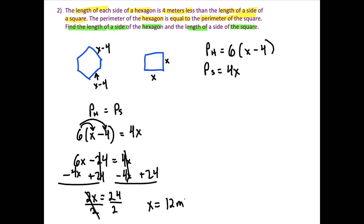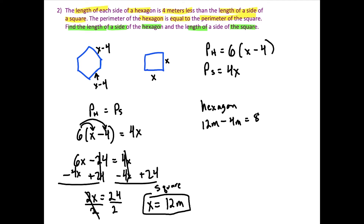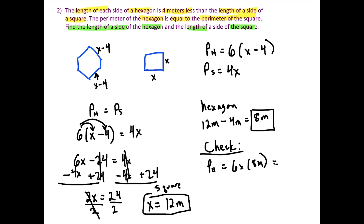So x equals 12 meters is the side length of the square. For the hexagon, each side is x minus 4, which is 12 minus 4 equals 8 meters. To check: the perimeter of the hexagon is 6 times 8 meters, which equals 48 meters. The perimeter of the square is 4 times 12 meters, which also equals 48 meters. The answer checks out.